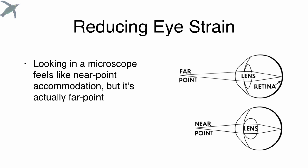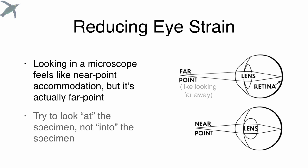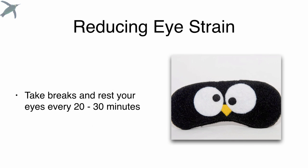Here's another thing: your focusing, your focal point. Your eyes automatically adjust as objects move toward and away from you, and we call this accommodation. Most people approach microscopy with a near-point accommodation. In other words, you focus your eyes as if you were reading. But actually, it's far-point accommodation. Try to look at the specimen and not into the specimen. And it sounds a little touchy-feely, but experiment with it. And you're going to find that you can help to reduce eye strain.